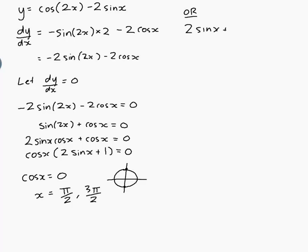Or 2sin(x) plus 1 equals 0, which would be 2sin(x) equals minus 1. So sin(x) equals minus a half. So let's think about that. 1, 2, root 3, π/6 just there. So x is going to be some variant of π/6. But we want sin of it to be minus a half.